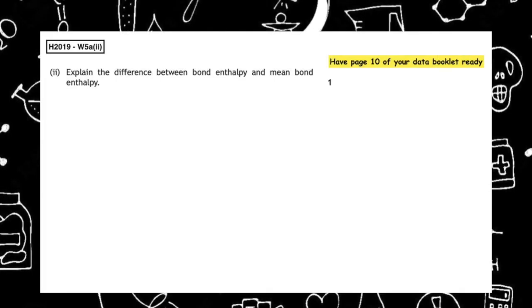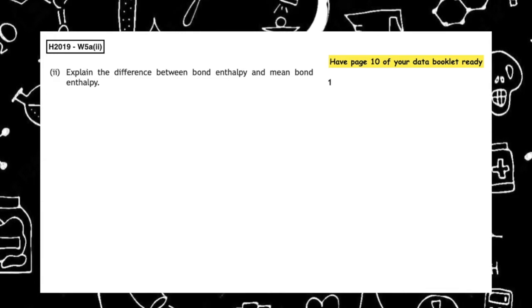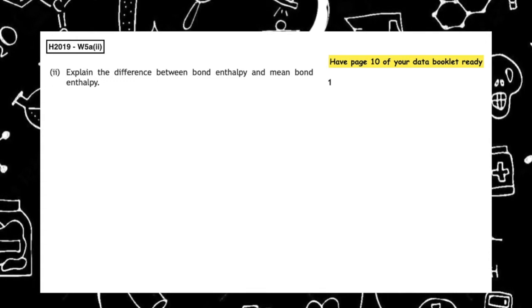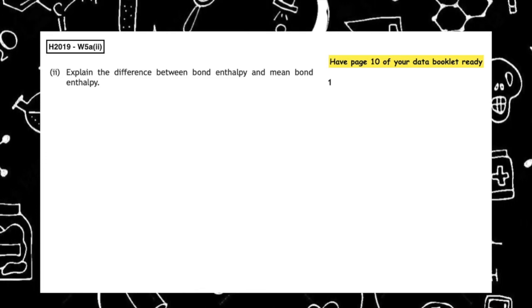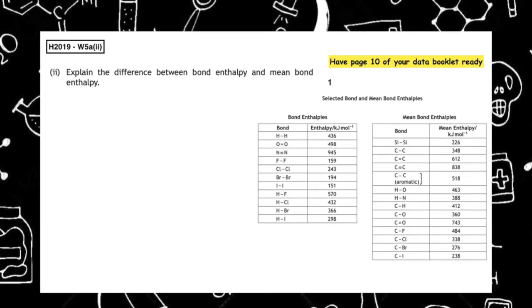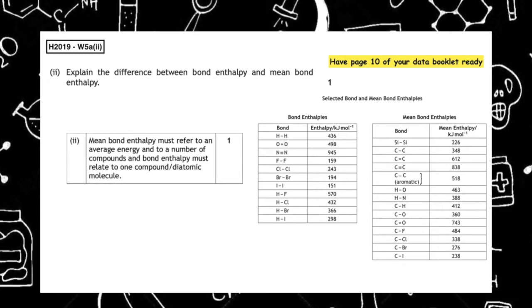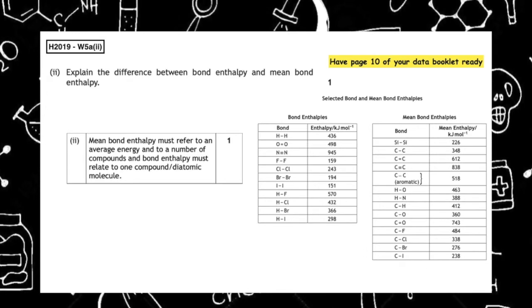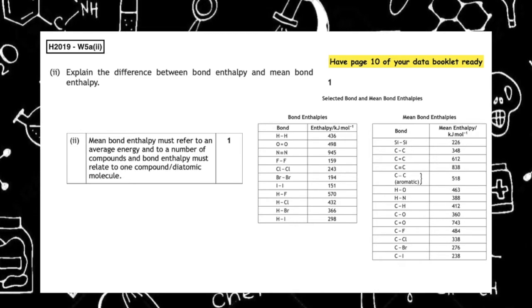This past paper question is from the Higher 2019 written 5a part 2: explain the difference between bond enthalpy and mean bond enthalpy. Because we have that keyword 'explain', we need to give the definition of both for the first mark. Remember both can be found on page 10 of your data booklet. Bond enthalpy is the energy required to break one mole of bonds in a diatomic molecule, whereas mean bond enthalpy is the average energy required to break a bond which can be found in a compound.